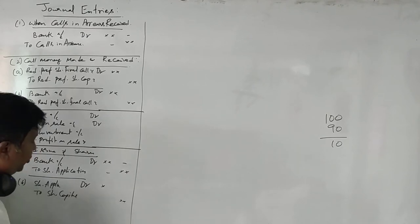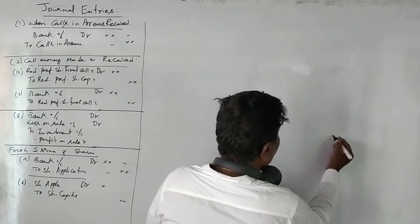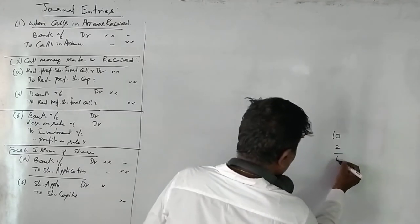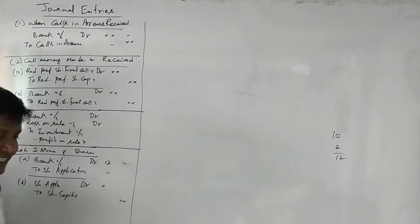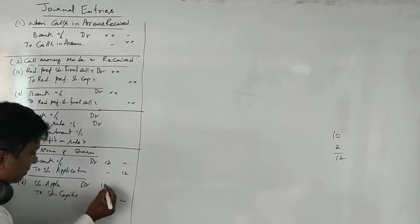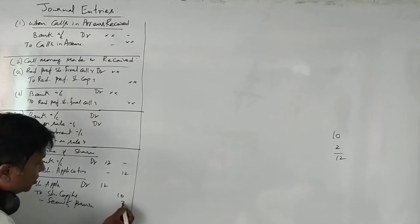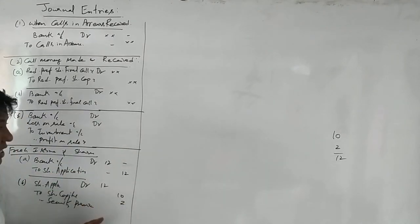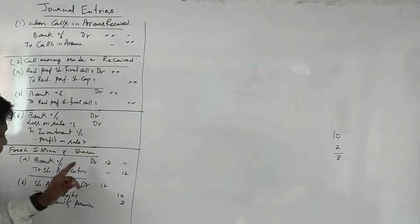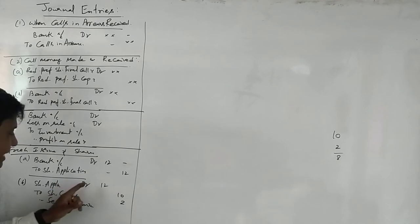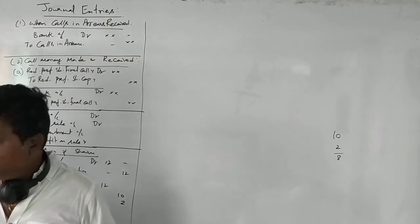If you are issuing shares at a premium, the remaining 2 rupees will be the security premium. If a 10 rupee share is issued for 8 rupees, then: bank account debit showing 8 rupees, discount on issue 2 rupees, and share capital remains the same at 10 rupees.